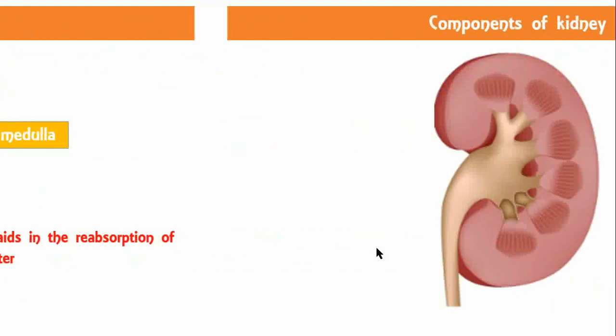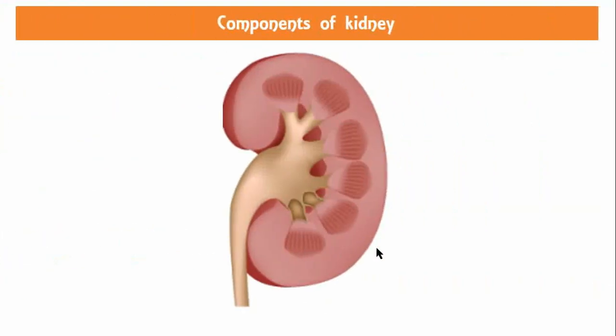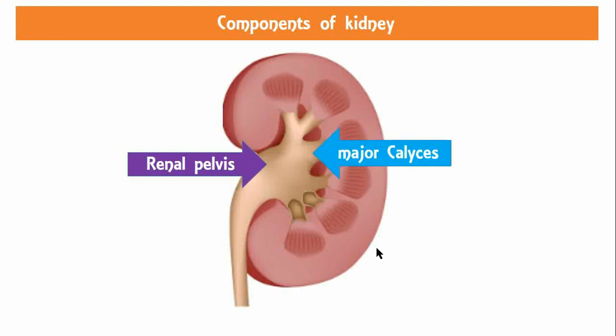The renal sinus is a cavity within the kidney occupied by the renal pelvis, which is the upper expanded part of the ureter. It subdivides into two or three major calyces and about eight minor calyces, along with branches of nerves, arteries, tributaries of veins, loose connective tissues, and fat.